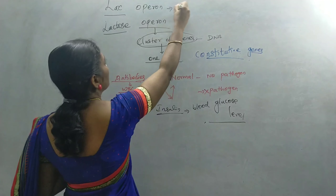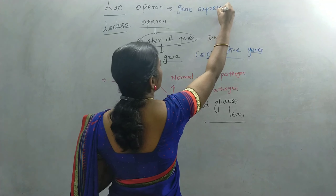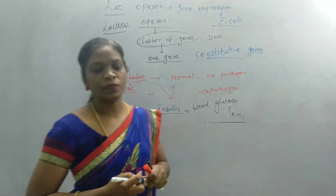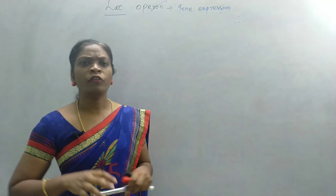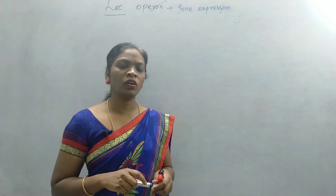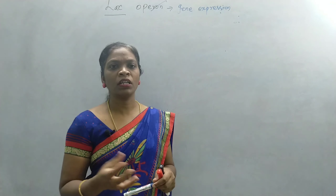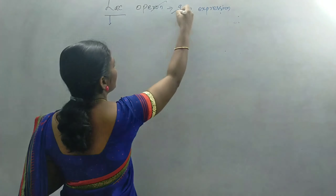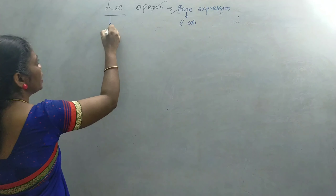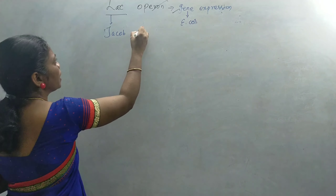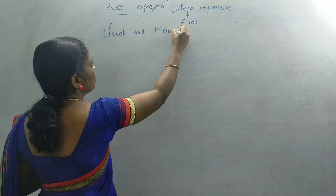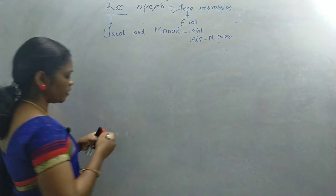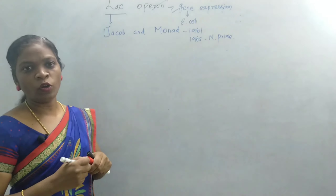Here we are going to learn about gene expression in E. coli, which is what we will learn under the lac operon concept. This lac operon concept was explained by Jacob and Monod. In 1965, they were given the Nobel Prize for their discovery of gene expression in E. coli. So here we will draw the lac operon concept model.